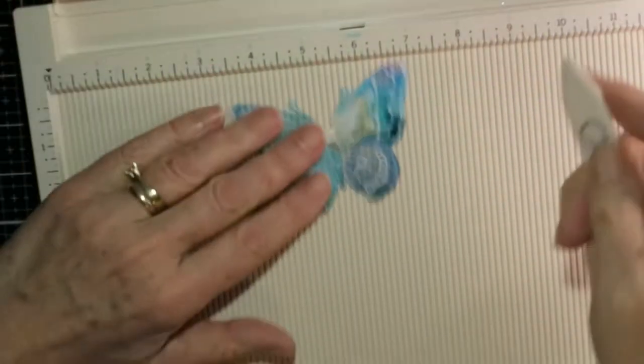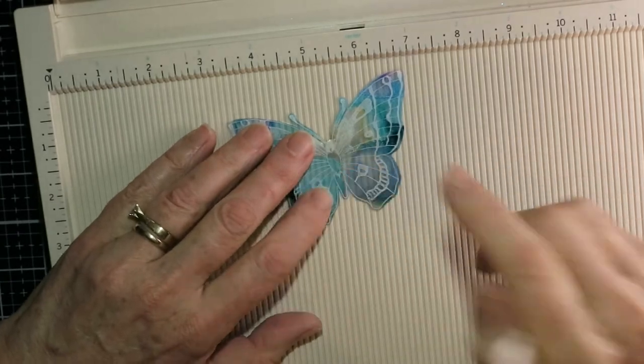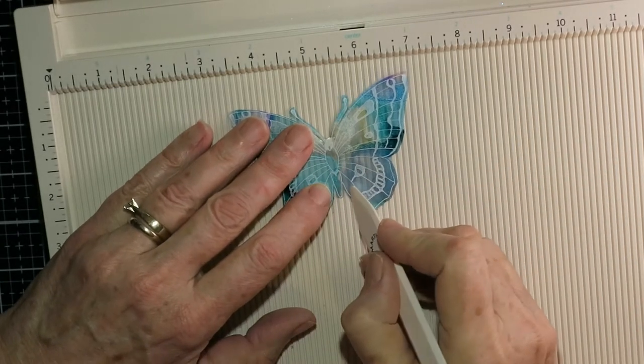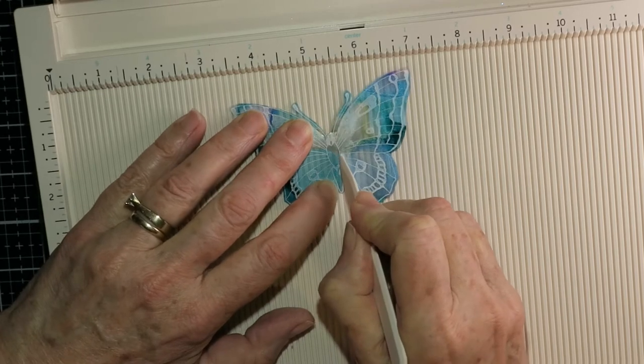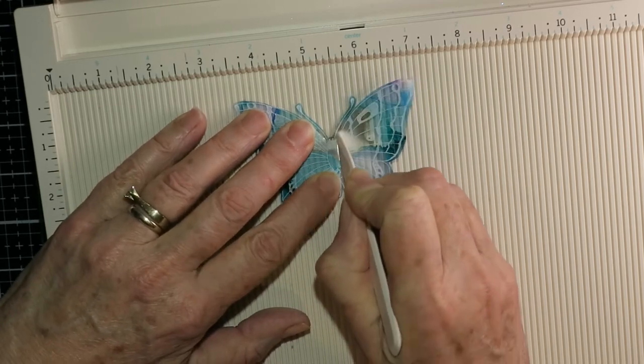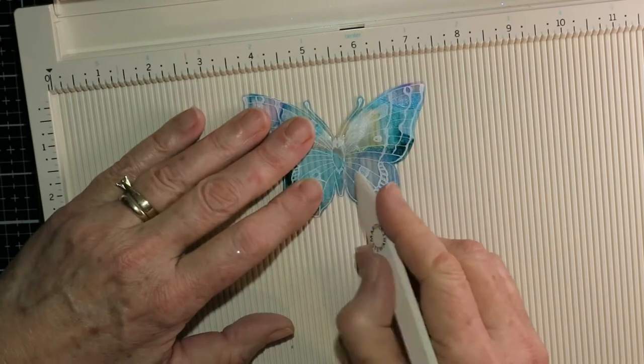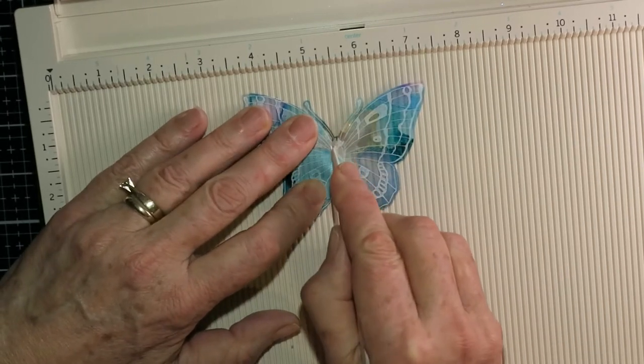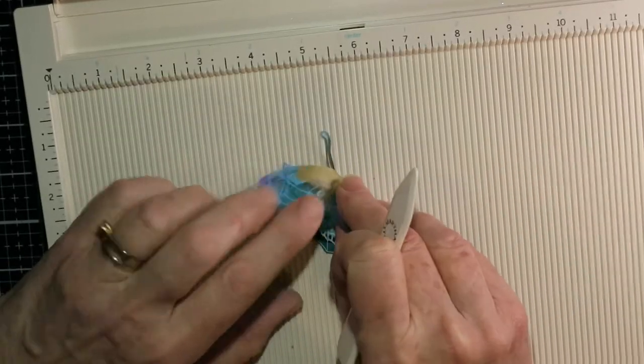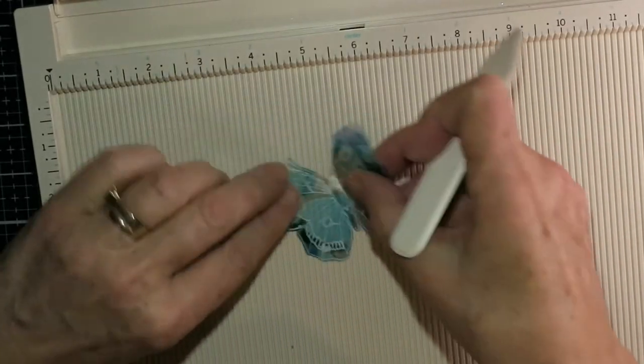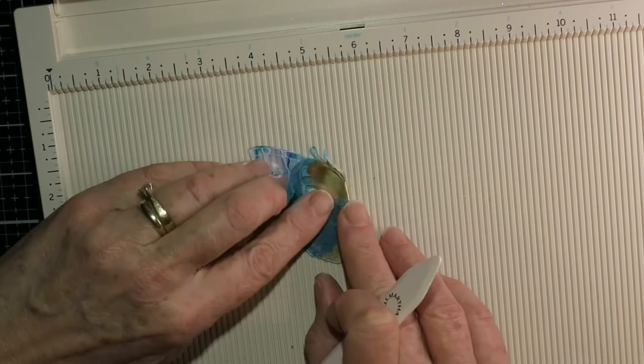So now to get those wings to fold, I just put the body of this butterfly along one of the crease lines on my scoreboard. And just ran my bone folder along that just to make a crease and again on the other side. And then I made sure that I creased both of those wings because I really wanted them to stand up a bit.